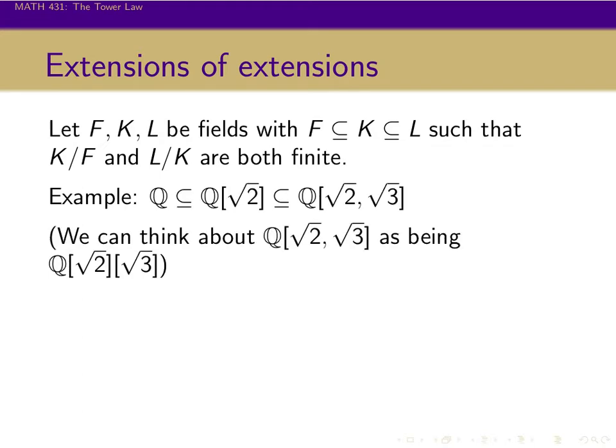As an example of this, you can start with F being the rational numbers, then K could be Q adjoined the square root of 2, and then L could be tacking on the square root of 3 onto that as well. So when we say Q adjoin square root of 2 and square root of 3, you can think about it as taking Q adjoin square root of 2 and adding on the square root of 3.